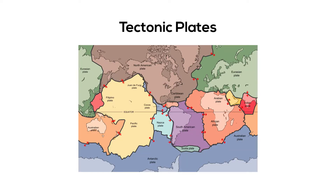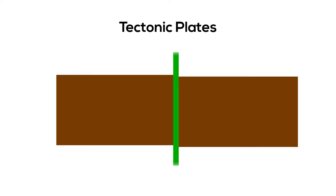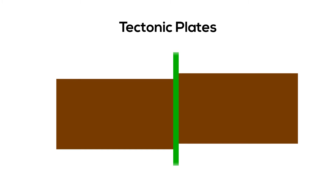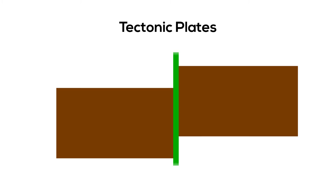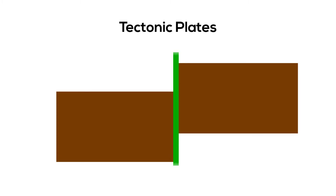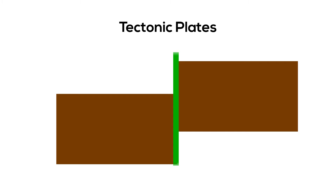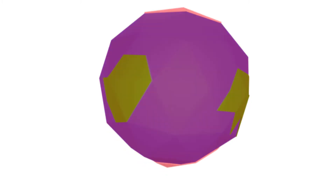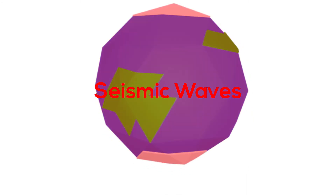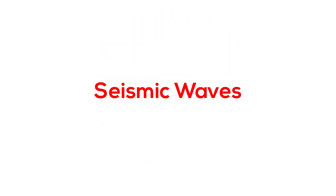The Earth's crust is not a single layer — it's made of sections called tectonic plates. These plates do not stay still. Over time they migrate around the planet, but sometimes, due to friction, they get stuck at their edges. When the pressure on these edges overcomes the friction, an earthquake happens, creating waves of energy called seismic waves that radiate out in all directions.